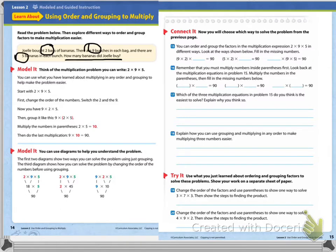If you're looking at this problem with me, you might notice that we have three factors. So let's look at modeling this. The first model says: think of the multiplication problem you can write, which would be two times nine times five.